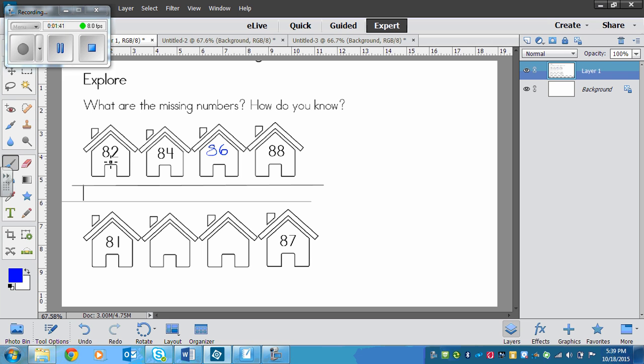So we've got 81, 82, this would be 83, 84, 85, 86, 87, and 88. So the pattern: this would skip count by two on even numbers and this one skip counts by two with odd numbers.